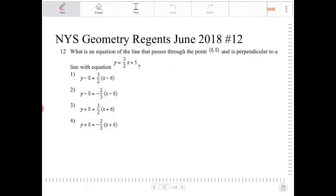Here in this case, the slope of the given line is 3 halves. The slope of the line that's perpendicular will be the negative reciprocal of that, which means this is going to be negative 2 over 3.